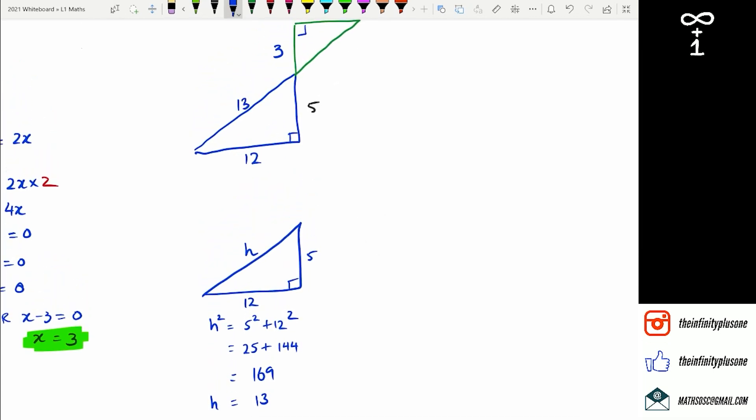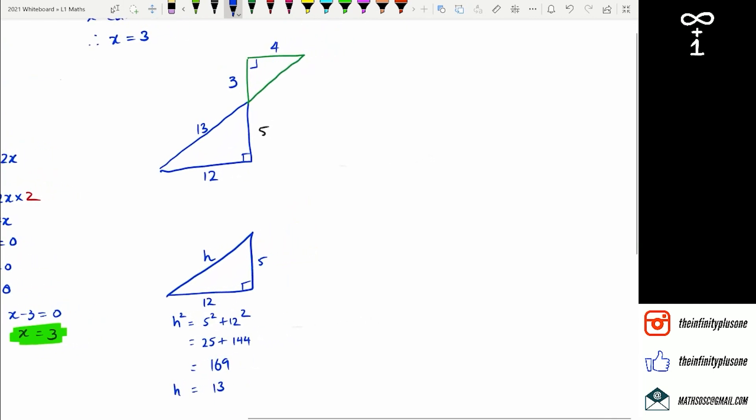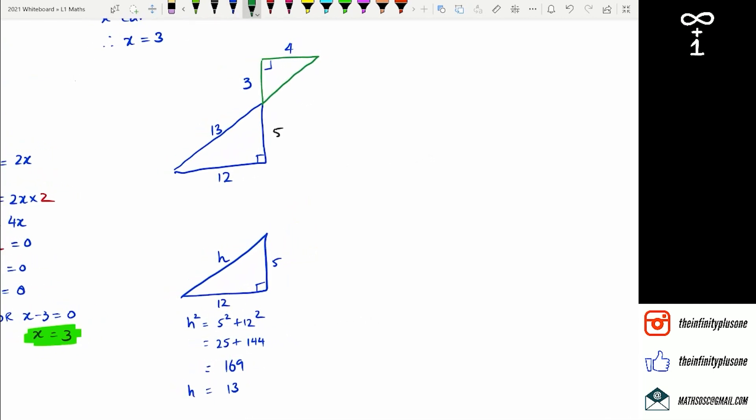So if I go to that top line there, this equals 13. And I have to repeat the same process for the green triangle. In the green triangle, I've got 3, 4. So I've got h squared. I'll just leave it as h. I'm sure you guys know what I'm talking about here. So you've got 3 squared plus 4 squared, which is 9 plus 16, which gives me 25.